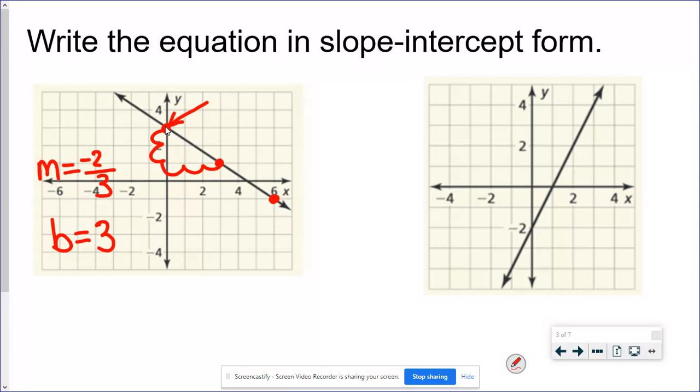Now that I know my m and my b so slope intercept form remember looks like y equals mx plus b all I have to do is put my two numbers in the right place. I want you to notice there's an x in slope intercept form however the slope is just the number so when we're talking about the slope please don't tag an x on to the end of that.